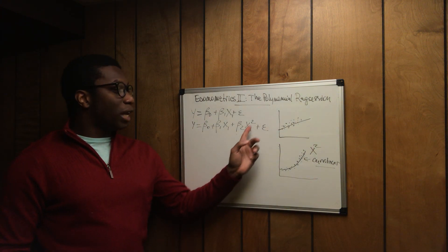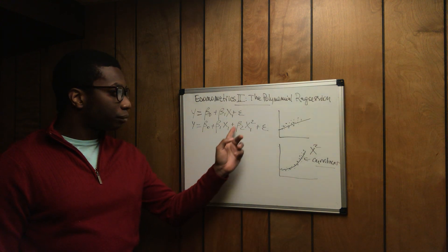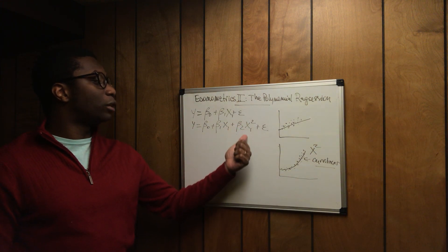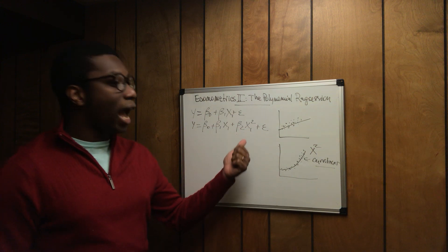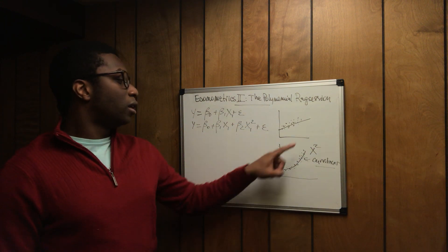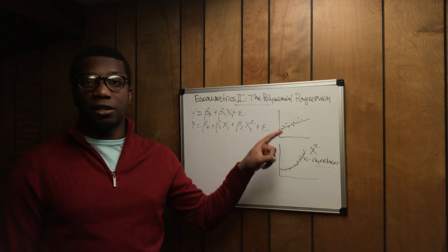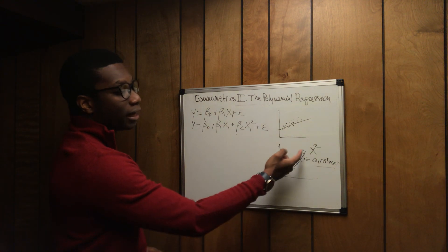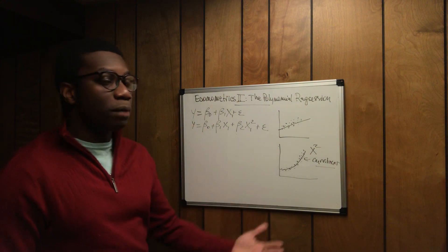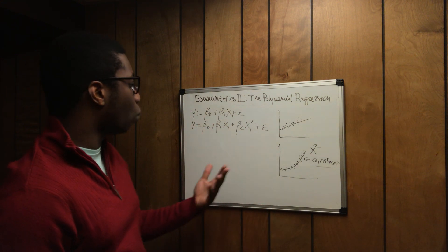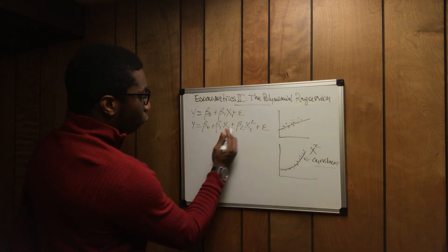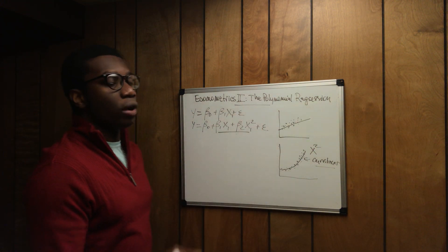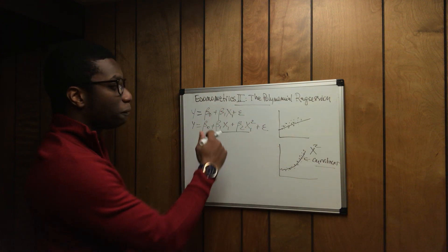We have added another predictor on top of the initial predictor, and that predictor has been squared. The reason why we square it is because the trend of the observations is curvy-linear. So whenever you observe a scatterplot with that kind of trend, you know that it is pretty much a polynomial regression that you're going to apply. This is for one independent variable and one dependent variable — it's like a simple linear regression but for the polynomial.